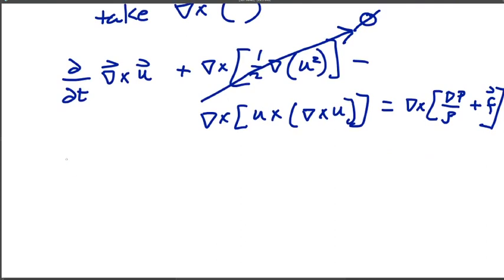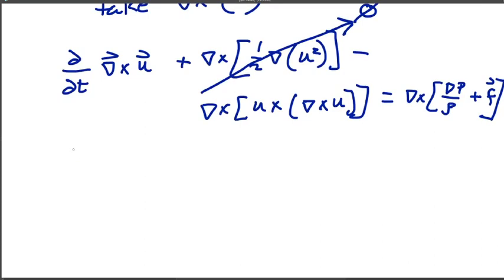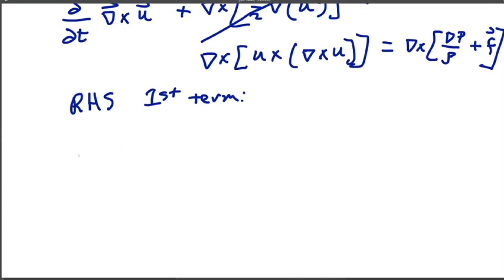So first term on the left-hand side other than the time derivative goes away. Let's consider the first term on the right-hand side. This is our pressure gradient term. We're going to use a vector identity here.